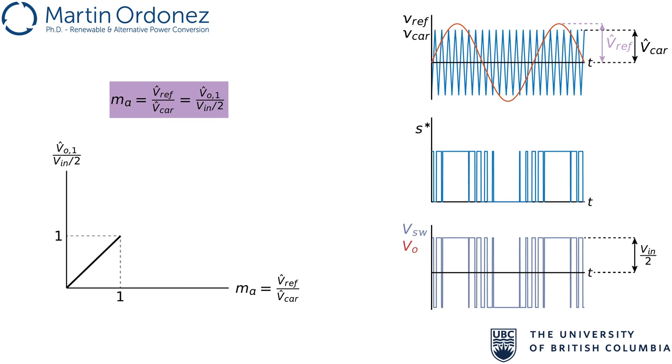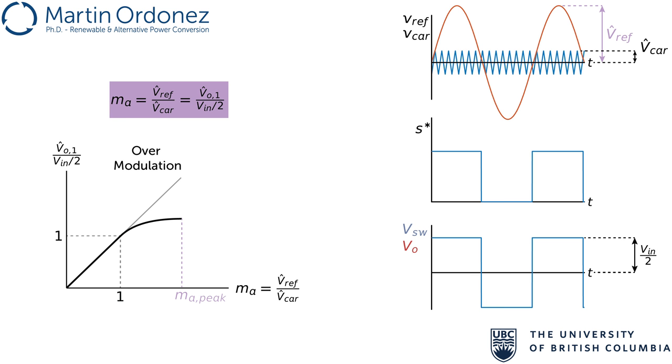When VREF becomes larger than VCAR, it will cause the pulses to be on or off for more than one switching period. This causes V out to be slightly bigger than V in over 2, but it does not follow a proportionality. This is called over modulation region. In this region, low frequency harmonics will become relevant and a bigger output filter will be required. For very large values of VREF, the switch will behave like a square wave and V out will have the maximum possible value. This is the square wave modulation region. In this region, the requirements of the filter are maximum.